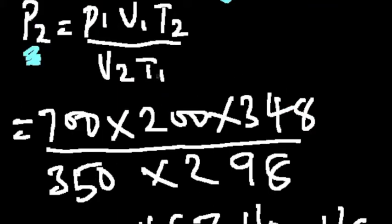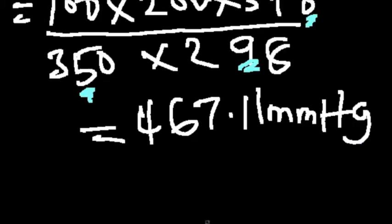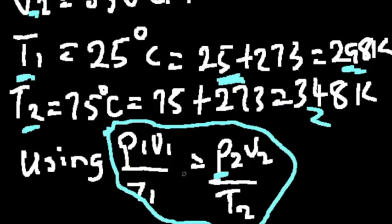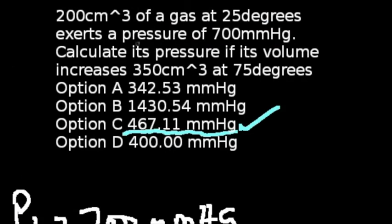So, we plug in our values there. We are simply going to have 700 multiplied by 200 multiplied by 348 divided by 350 multiplied by 298. That will give us 467.11 mmHg. And this answer corresponds to option C.